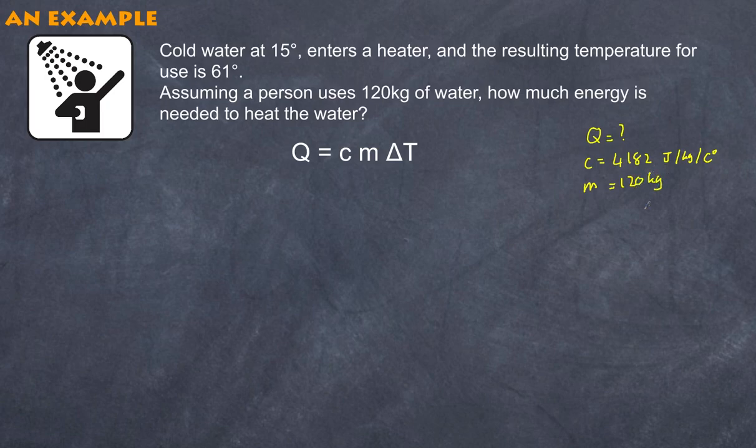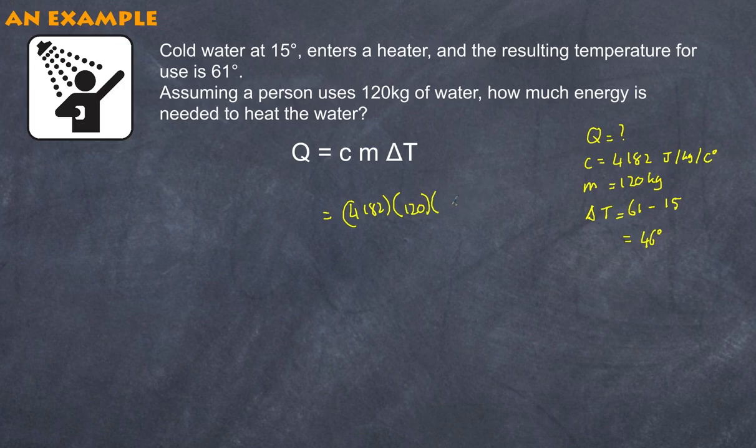And our change in temperature, our delta T, which is equal to 46 degrees. And so therefore, 4182 multiplied by 120 multiplied by our change in temperature, which is 46 degrees, gives us a grand total of 2.3 by 10 to the power of 7 joules. That's how much energy has gone into the water.